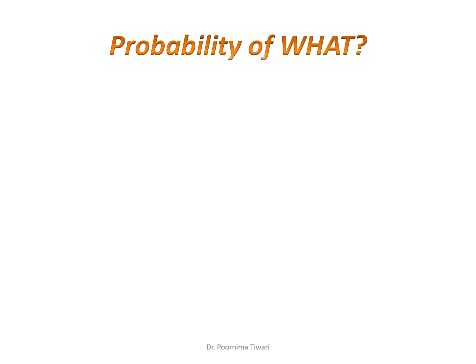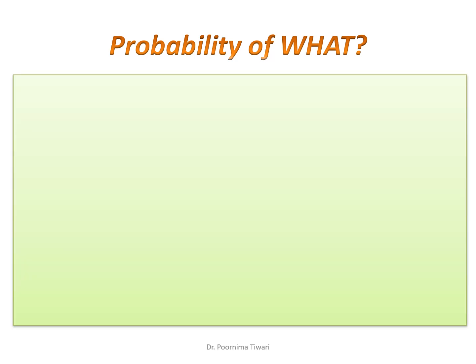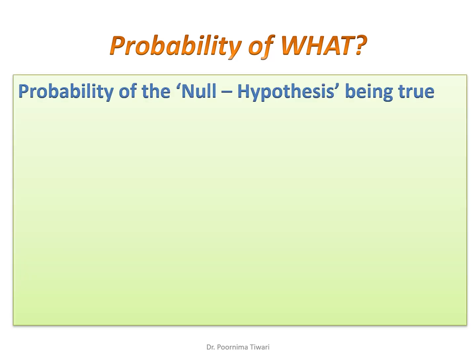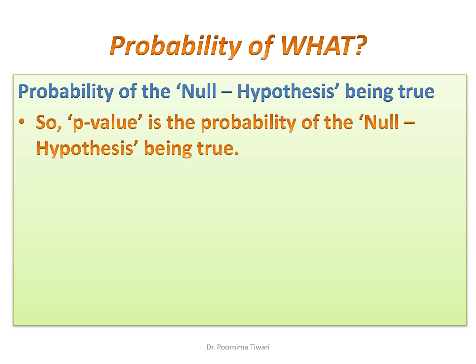So p-value is the probability, but probability of what? It is the probability of the null hypothesis being true. So p-value is the probability value of the null hypothesis being true.